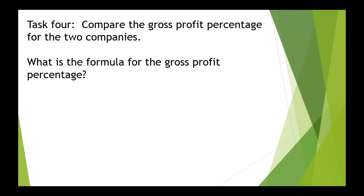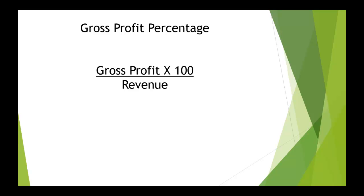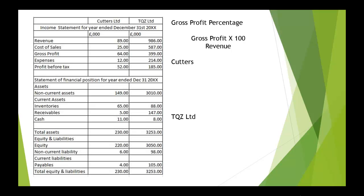Task 4 is to compare the gross profit percentage for the two companies. We need the formula for the gross profit percentage, which is the gross profit times 100 divided by the revenue. It's a fairly easy one to work out. So for Cutters, we'll do those first.